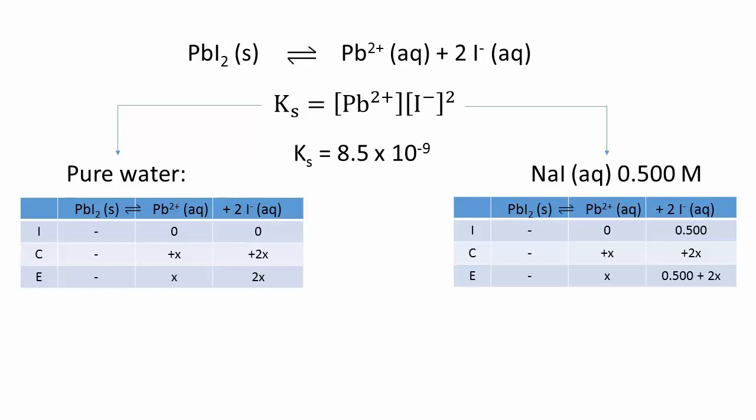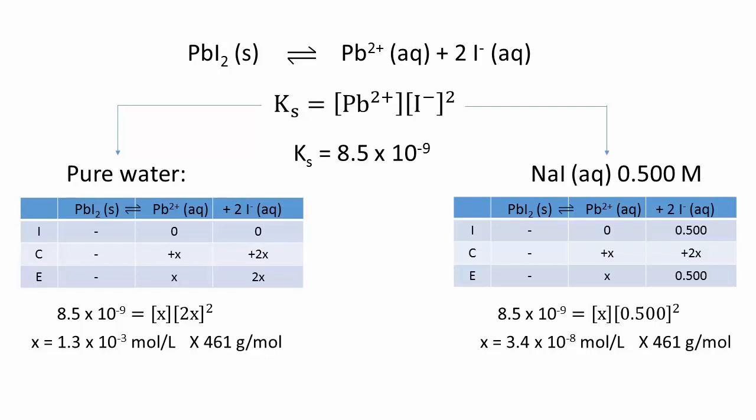In the 0.5 molar sodium iodide solution, the value of 2x is negligible compared to the initial value of 0.5 molar. With that done, we use the solubility product to find the value of x in each case. We then take the molar solubility x and convert it to a solubility by multiplying it by the molar mass of lead iodide.